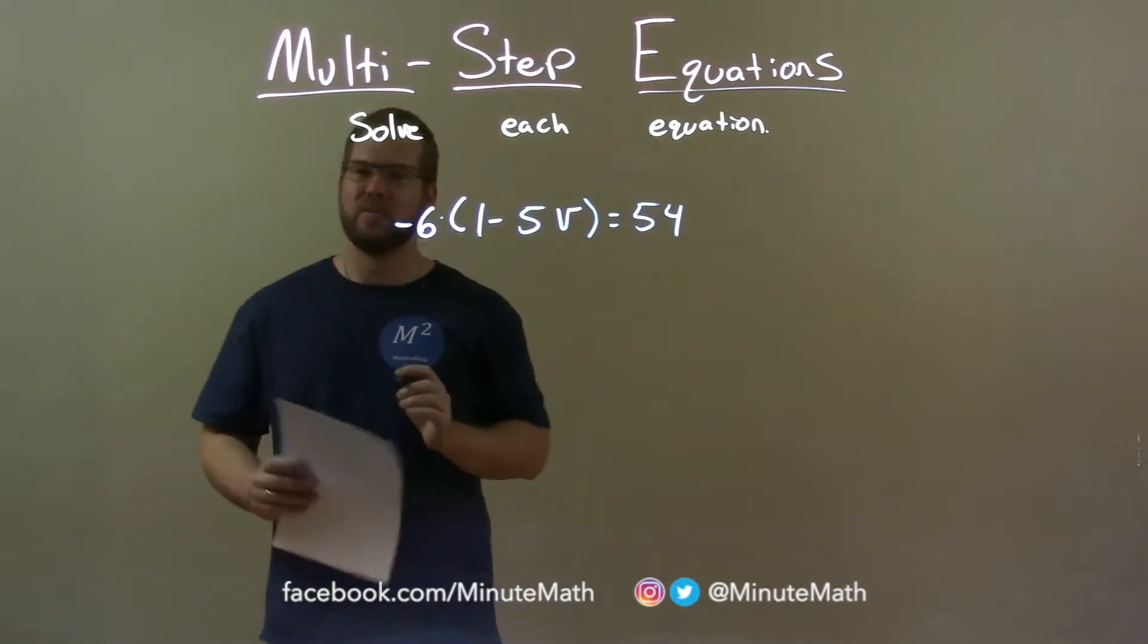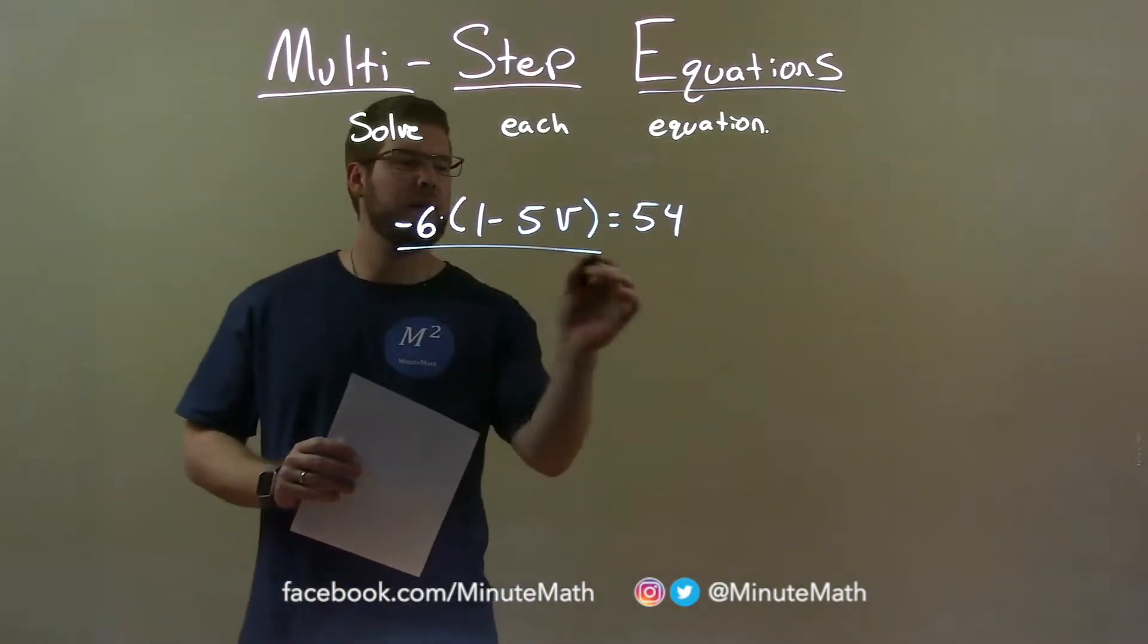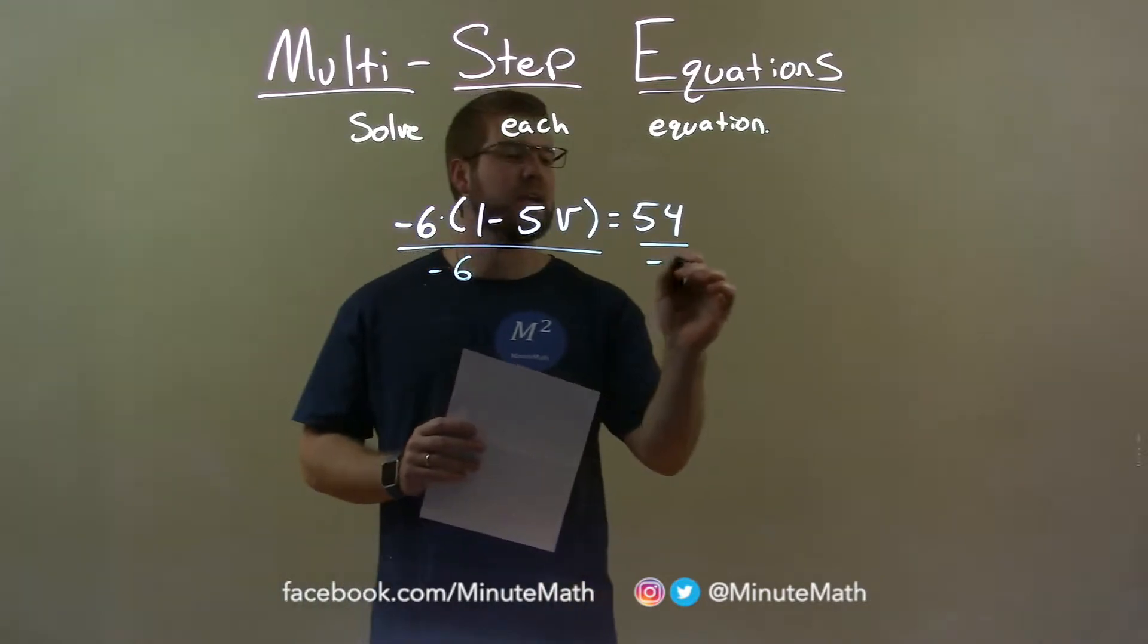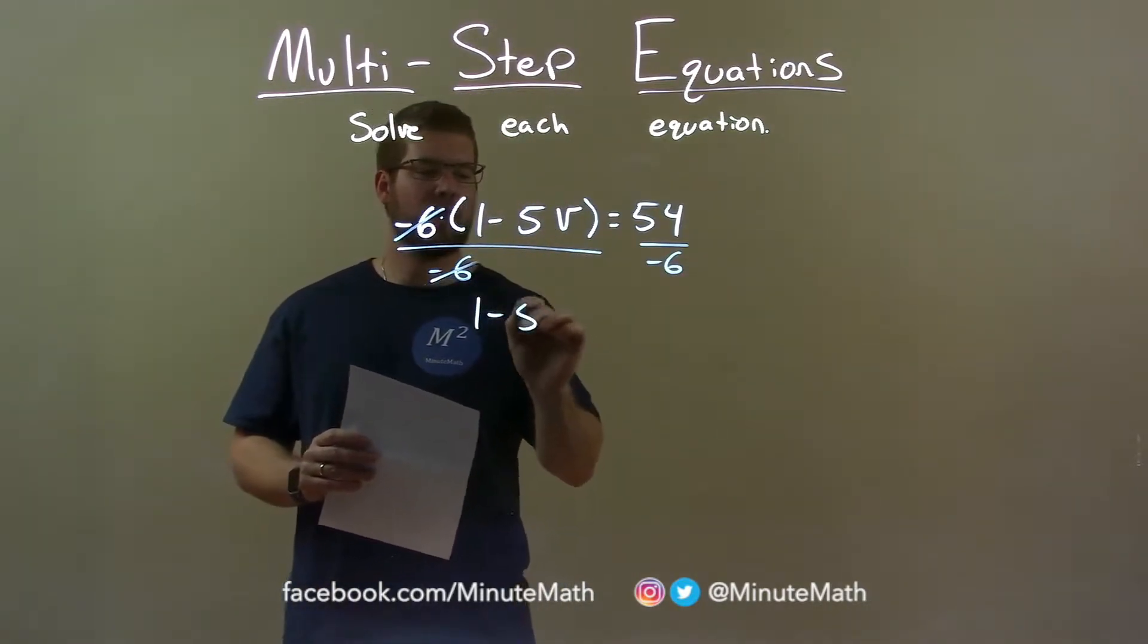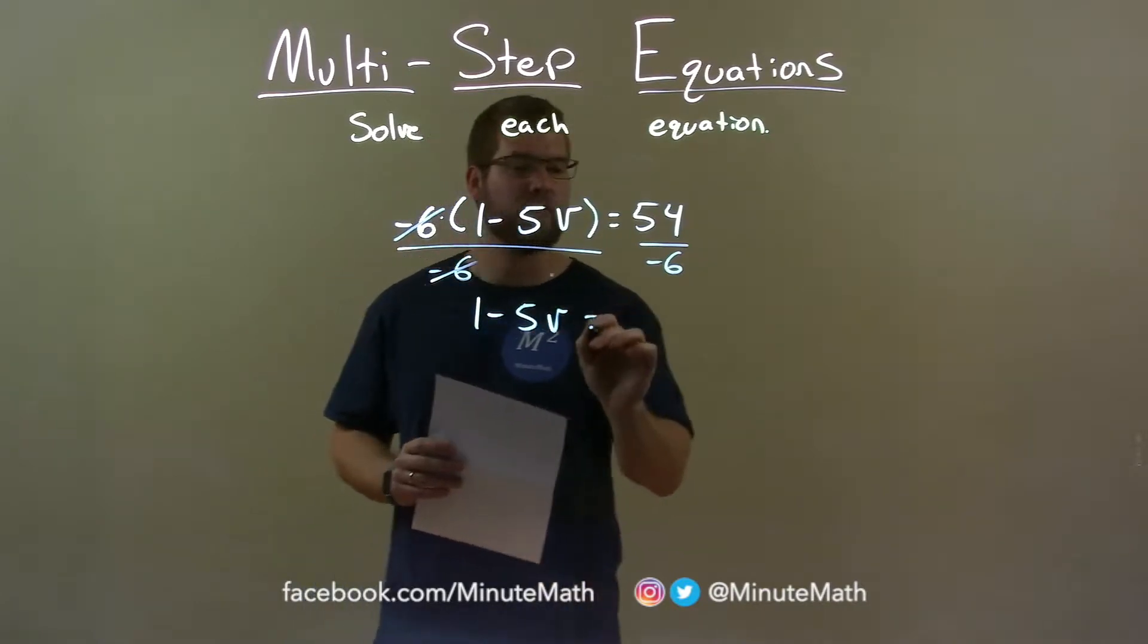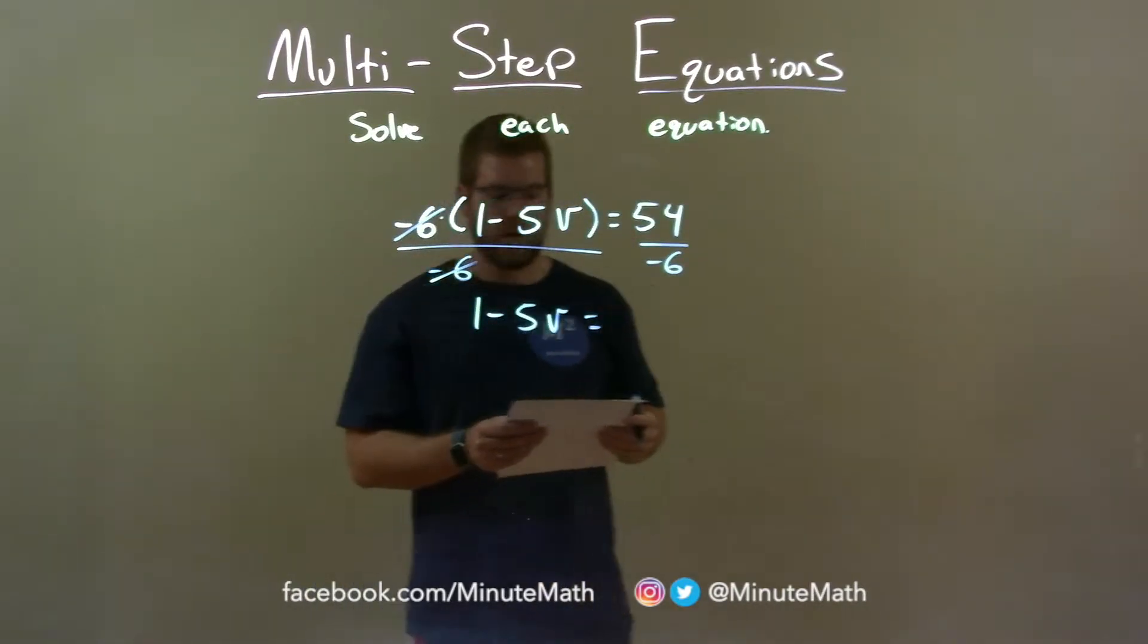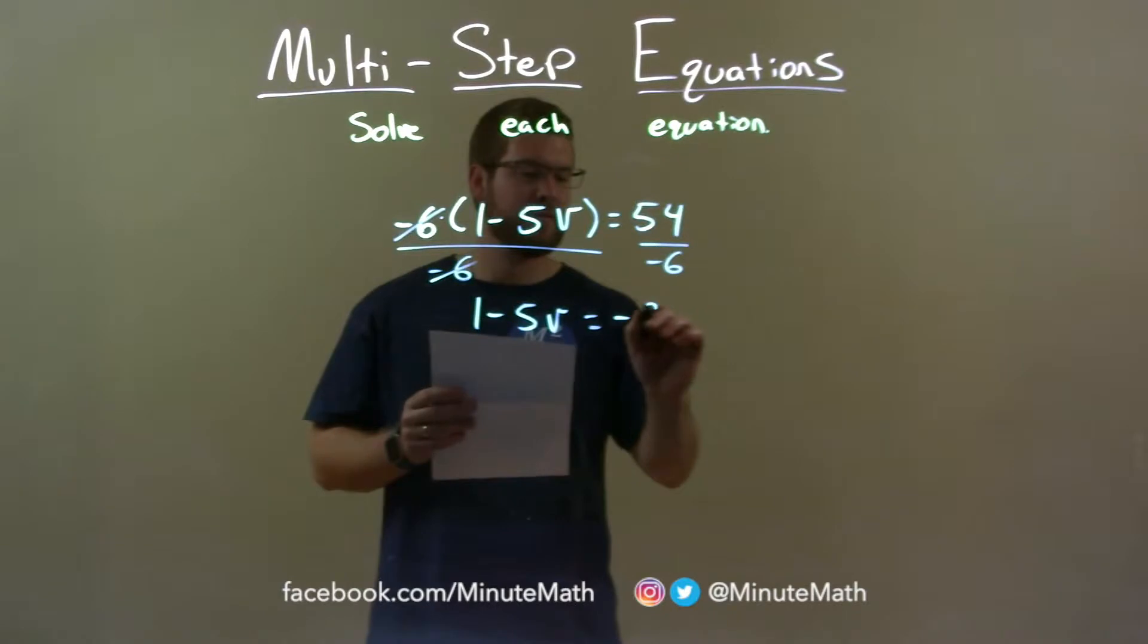First thing, well I have multiplication going on here, so I'm actually going to divide both sides by negative 6. Negative 6 cancels, giving me 1 minus 5V, what's in the parentheses, left over. On the right, 54 divided by negative 6 is negative 9.